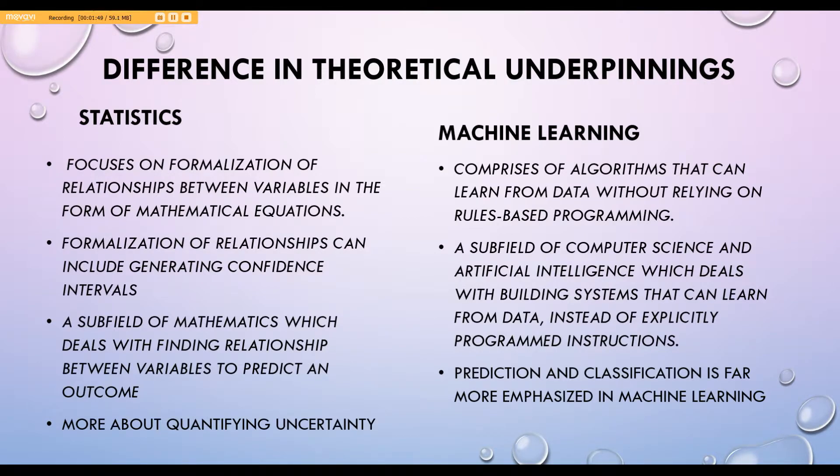Statistics is a subfield of mathematics which deals with finding relationships between variables to predict an outcome. Machine learning comes from computer science and artificial intelligence and deals with building systems that can learn from data instead of explicitly programmed instructions.